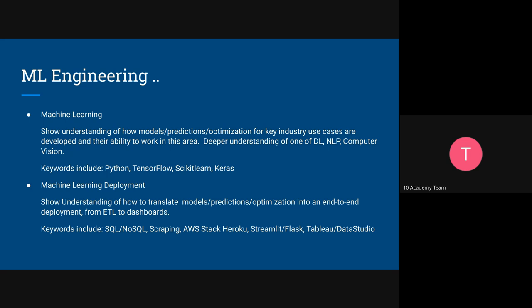The third area for machine learning engineering is machine learning deployment — understanding how to build an end-to-end pipeline with models. This overlaps with data engineering and includes knowledge of SQL, databases, and scraping on one side, and on the deployment side, visualizations, dashboards using Streamlit, and building front-end interfaces. These are the three areas to increase proficiency in for the machine learning track.